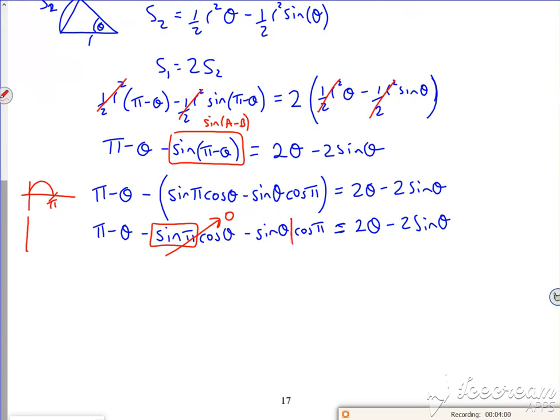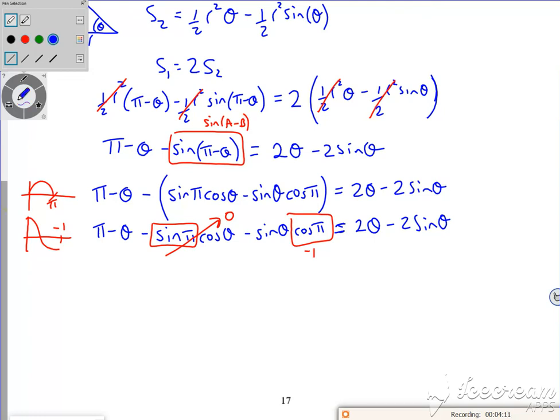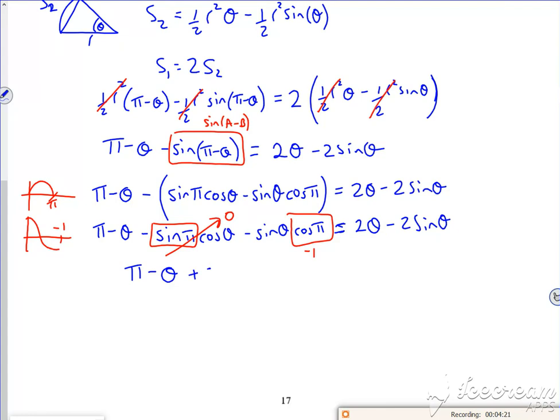Then I've got cos of pi, four minutes. Oh my word. So cos of pi is minus one. So this bit here is minus one. So I'm going to have a pi minus theta. The minus sine pi cos theta disappears. I've got minus sine theta times by minus one. So that's plus sine theta. It's two theta minus two sine theta.